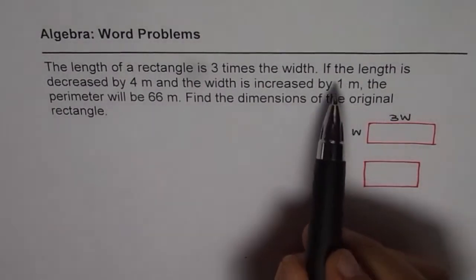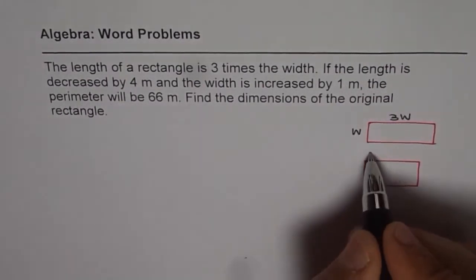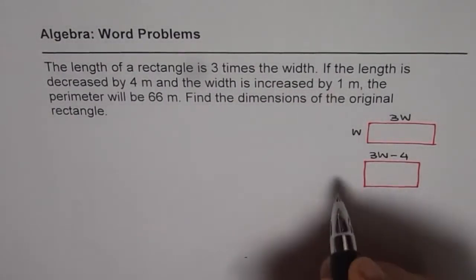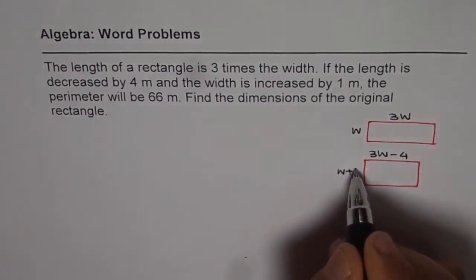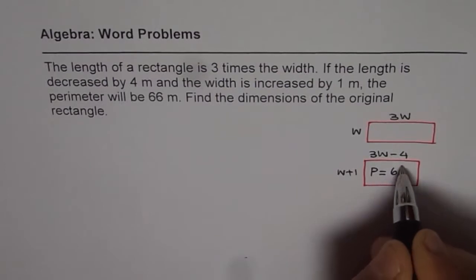Now what really happens? If the length is decreased by four, length was 3W, so let's write 3W minus 4. And width is increased by one, so we'll do W plus 1. Then the perimeter is equal to 66.